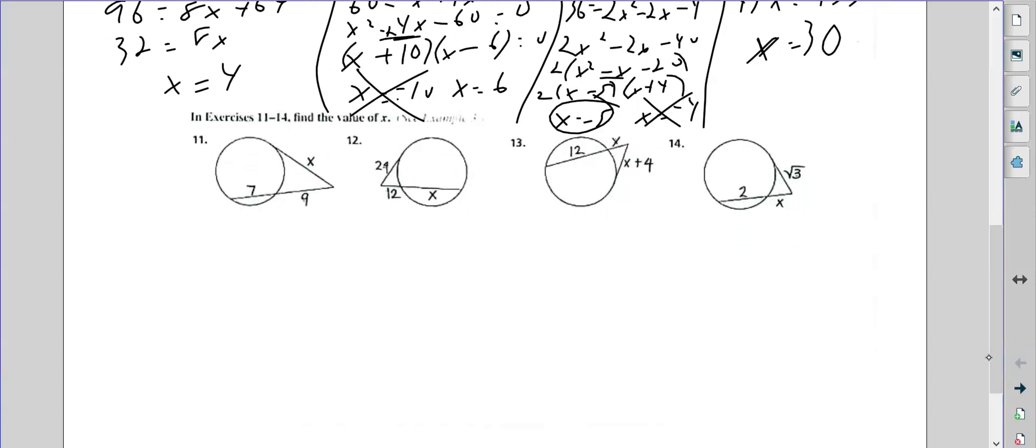Okay, this one's similar. This is going to be part times whole. But then this part is just squared. So x squared equals 9 times (9 plus 7), which is 16. So x squared equals 144.